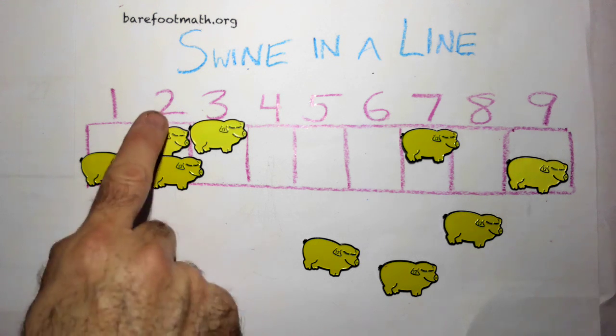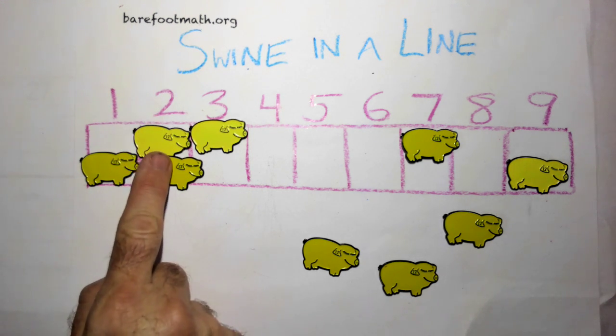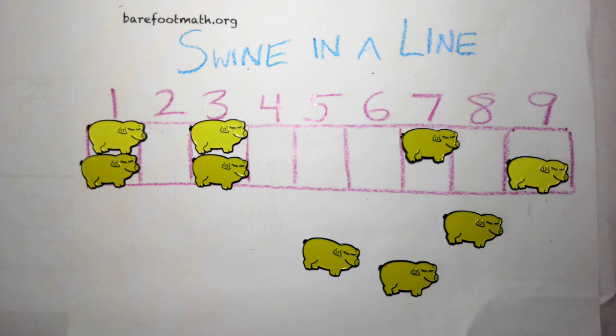One of the pigs in the pen jumps one pen to the left, and the other jumps one pen to the right. Left, right. This doesn't count as a separate turn, it's just a consequence of the player's choice to put a pig into a pen that already had a pig in it.